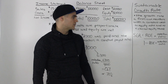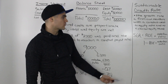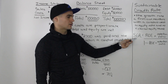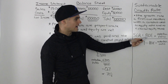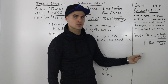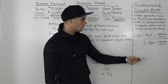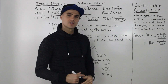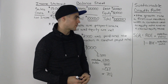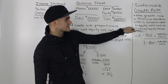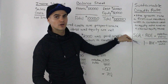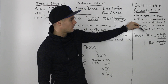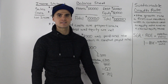Now let's get into how to calculate the sustainable growth rate. The sustainable growth rate, which I denote as SGR, is equal to the return on equity times the retention ratio, all over 1 minus the return on equity times the retention ratio. It's very similar to the internal growth rate — the only difference is that instead of return on assets, we now have return on equity instead.